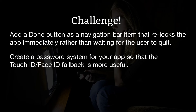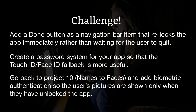You'll need to use an alert controller with a text field like we did in project 5, and I suggest you save the password in the keychain. Third, go back to project 10 — Names to Faces — and add biometric authentication so users' pictures are shown only when they've unlocked the app. You'll need to think about how to hide the pictures — perhaps leave the array empty until they are authenticated.